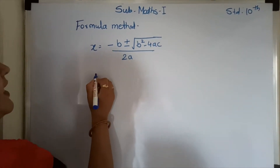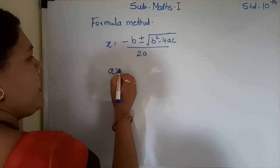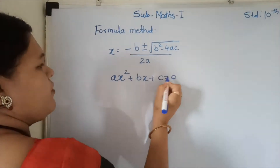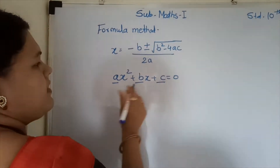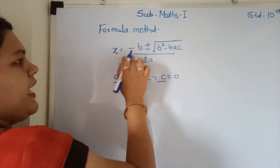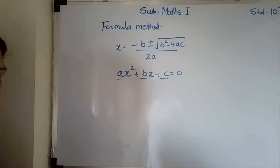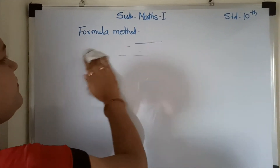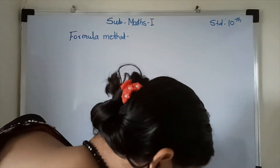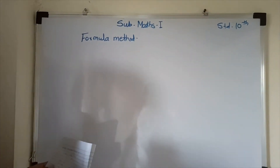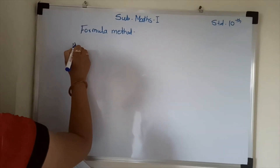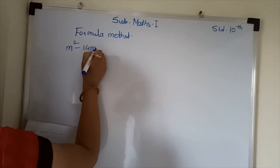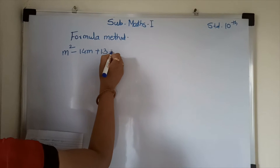What is a, b, c? You know the standard form of quadratic equation is ax square plus bx plus c is equal to 0. Here in the formula method, a, b, c are the same. For this we solve an example. Solve the quadratic equation by using the formula. The quadratic equation is m square minus 14m plus 13 is equal to 0.